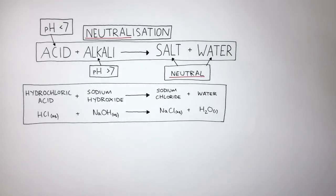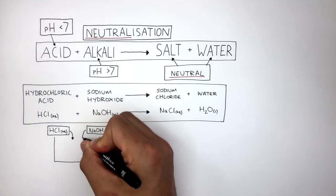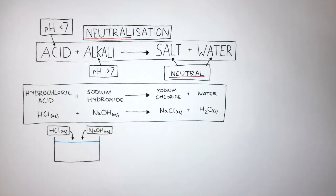To understand what actually happens when an acid is neutralized by an alkali, here we have a beaker and we put HCl and NaOH into the beaker. In this reacting mixture, there are hydrogen ions, chloride ions, sodium ions, and hydroxide ions.